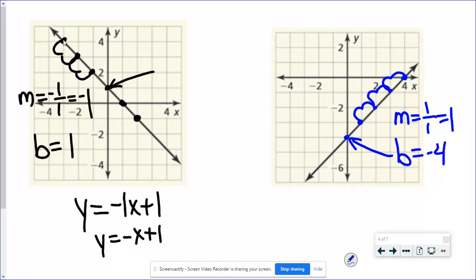So if I would just put those two numbers into my formula I would have y equals one x plus negative four and we could clean that up and just say y equals x minus four. Same equation.